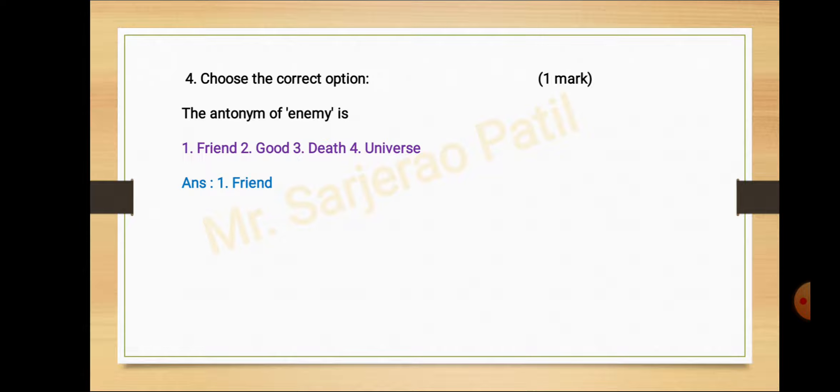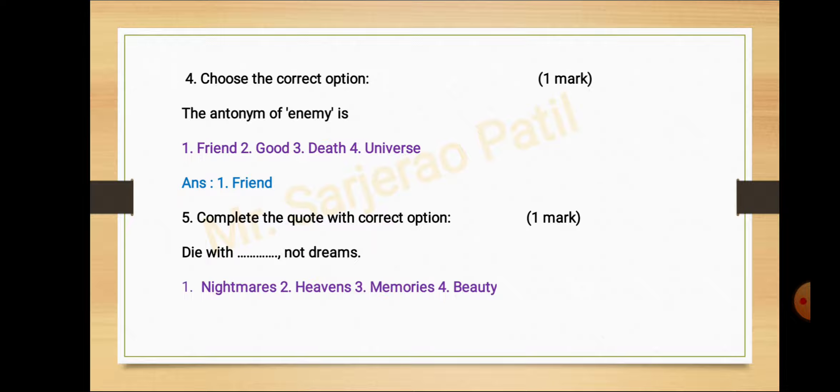Activity number five, complete the quote with the correct option. Die with dash dash not dreams. Options are: nightmares, heavens, memories, beauty. Die with memories not dreams. Answer is option number three, memories.